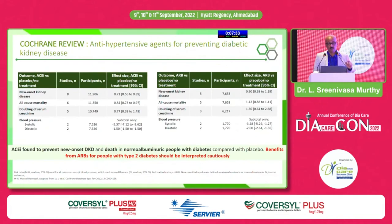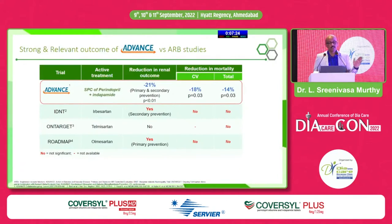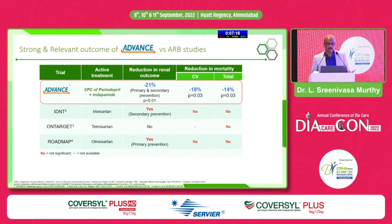In normal albuminuric people with diabetes, benefits from ARBs compared with placebo should be interpreted with caution. The SPC of perindopril-indapamide showed a 21% reduction in renal outcome, 18% and 14% reduction in mortality respectively. In contrast, ON-TARGET, ROADMAP with valsartan, telmisartan, and irbesartan showed no reduction in mortality, though there was some reduction in renal outcomes.